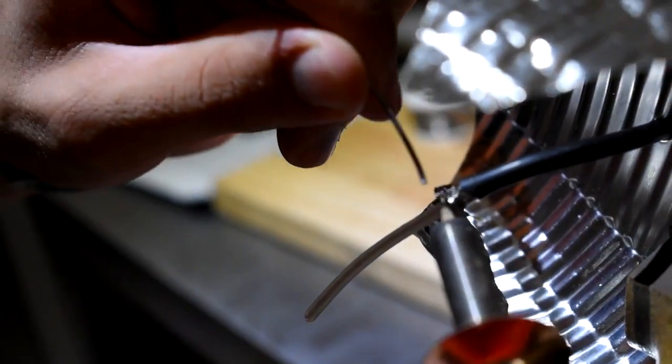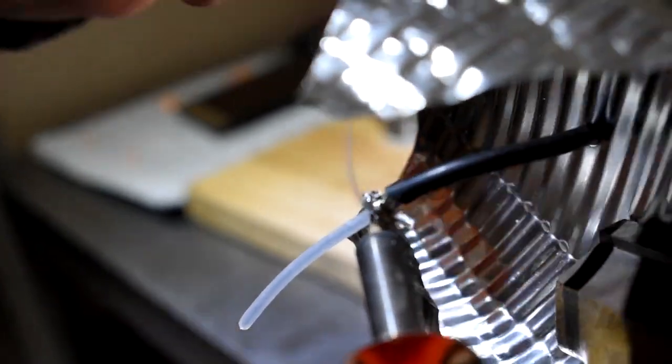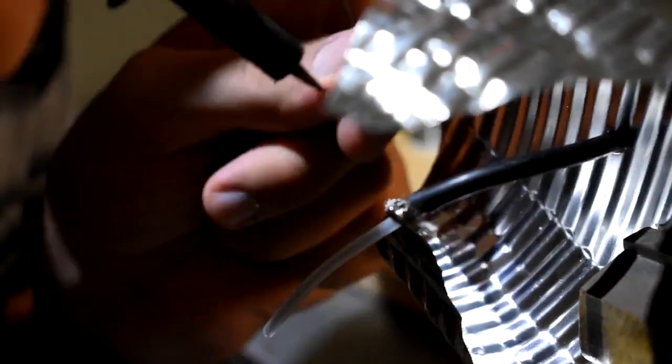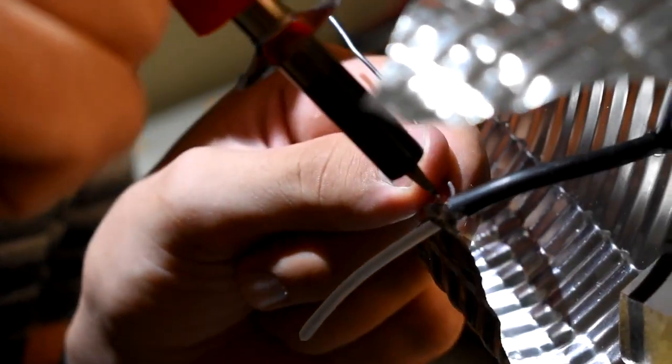To make the soldering process easier, preheat the area that is to be soldered by directly applying the soldering iron to the surface for a few seconds.